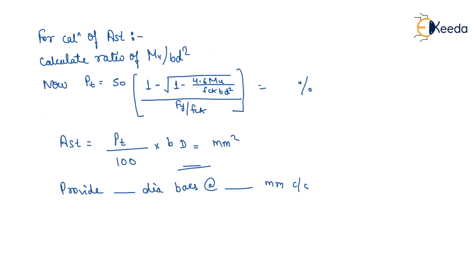Now for calculation of Ast, calculate ratio of Mu/(bd²). Now Pt equals 50[1 - √(1 - 4.6Mu/(fck×b×d²))]/(fy/fck), which equals percentage. By using this formula, we will get Pt value in percentage.